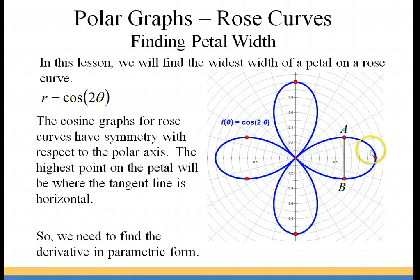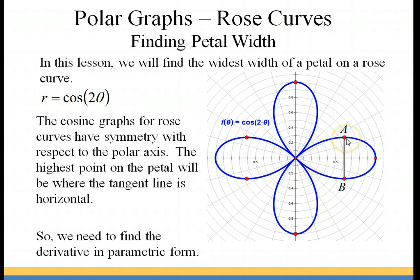It's most convenient to use this petal here because where we have point A, our highest point on our petal, we're going to have a horizontal tangency at that point. So we'll be able to identify point A. In order to get that horizontal tangency, we must first rewrite our polar equation in parametric form.